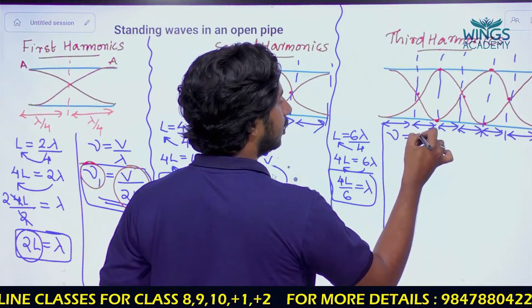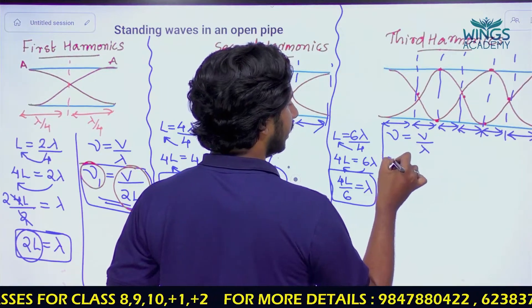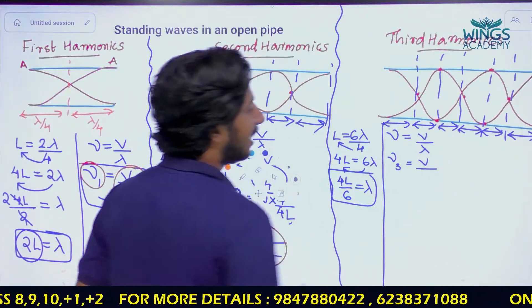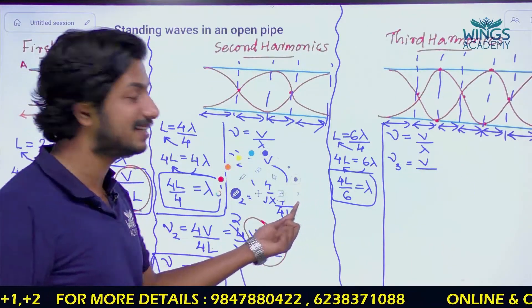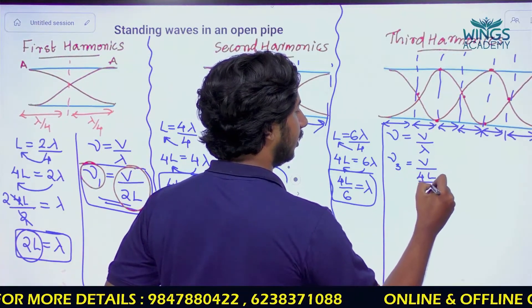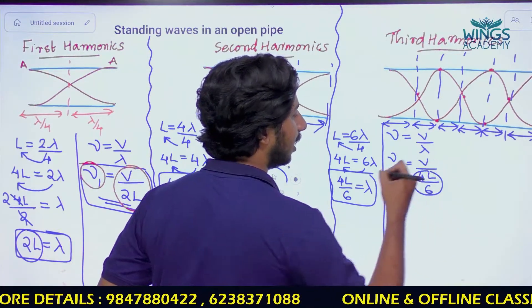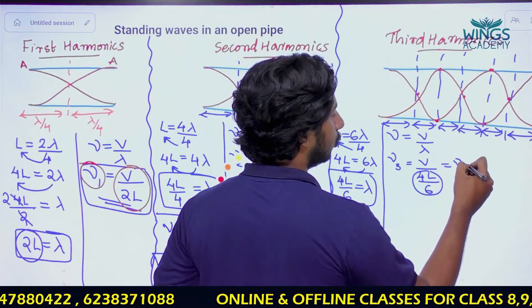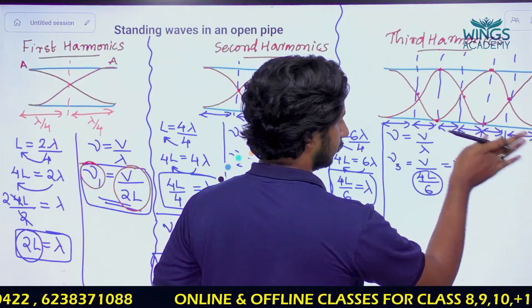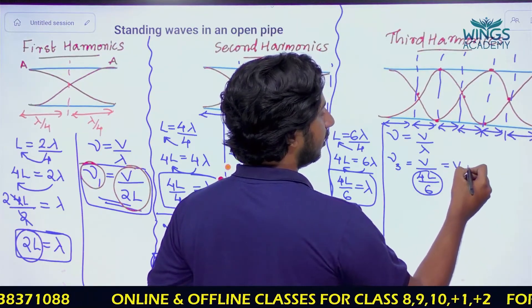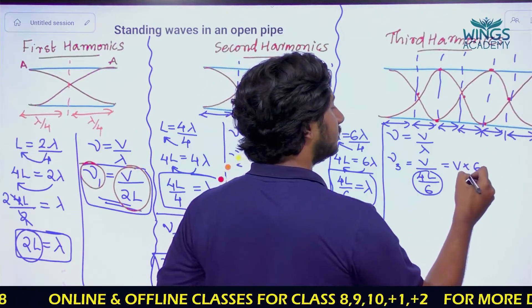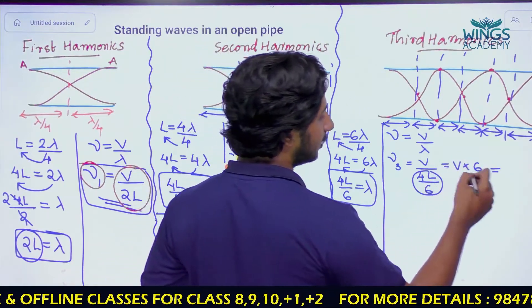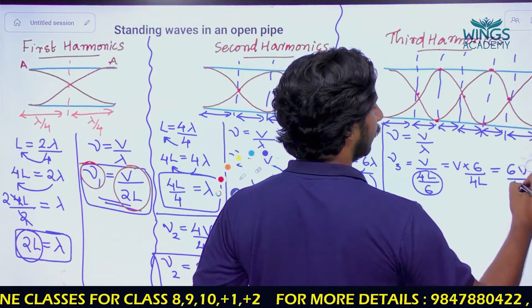ν = V/λ. For the third harmonic, ν₃: lambda is equal to 4L/6. Substituting, ν₃ = V ÷ (4L/6) = 6V/4L. Simplifying, ν₃ = 6V/4L = 3V/2L.